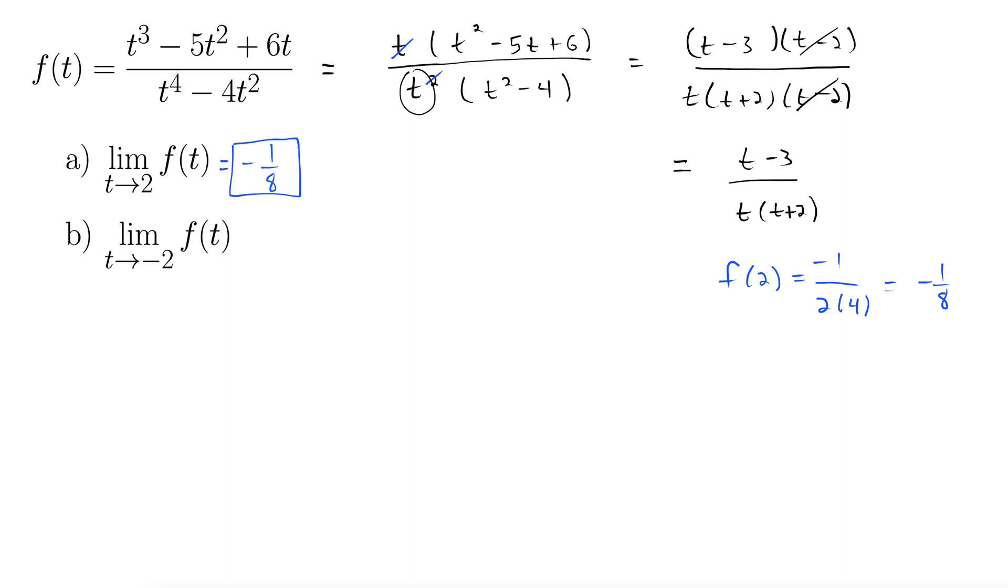Let's take a look at b. Now we're coming into negative 2. So again maybe we can get lucky again. Let's just try plugging in negative 2. If we plug in negative 2 into our new simplified form of f(t), let's just try it out. f of negative 2 is negative 2 minus 3, that's negative 5 over negative 2, uh oh, times 0. Nope.